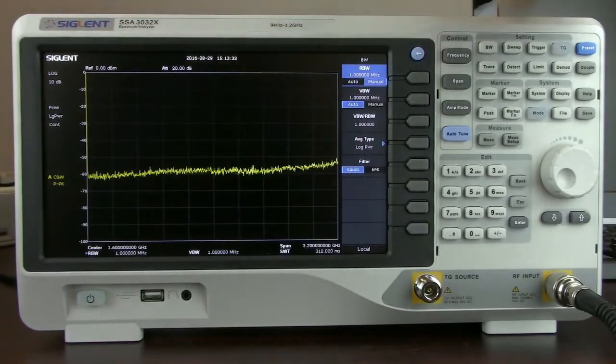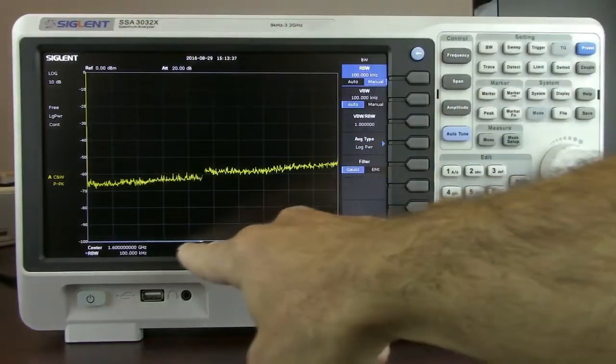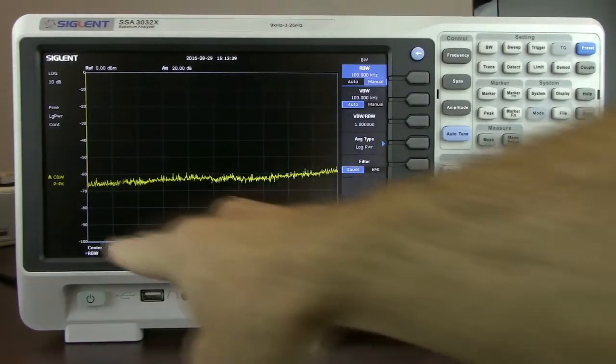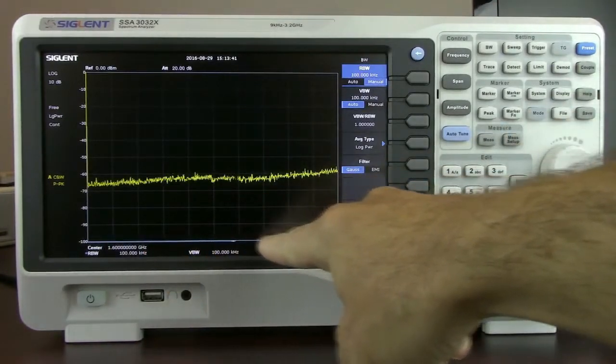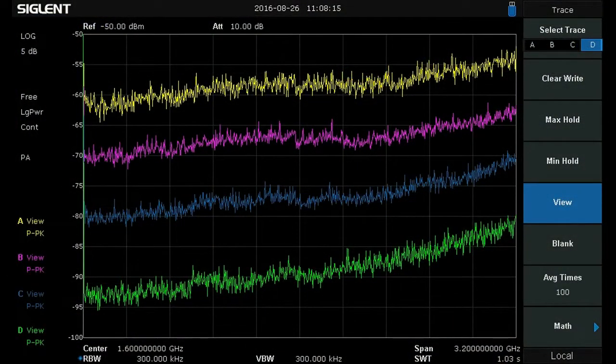And also when you slow down the resolution bandwidth in a sweep you'll see that there's a progress bar that helps indicate exactly where you are located in the frequency space which is nice. The instrument also features the ability to show up to four traces simultaneously.